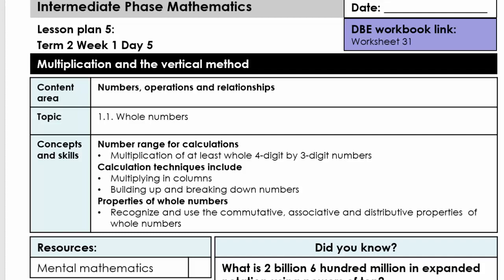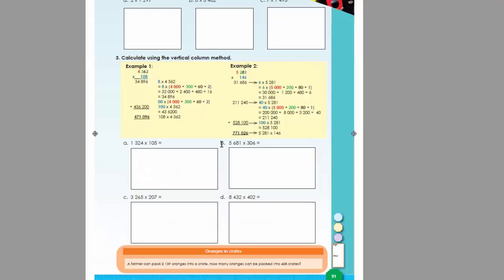Good day everybody, today we're going to do lesson plan number 5, term 2, grade 6, and the topic is multiplication using the vertical method. The link to the work DBE workbook is worksheet number 31.